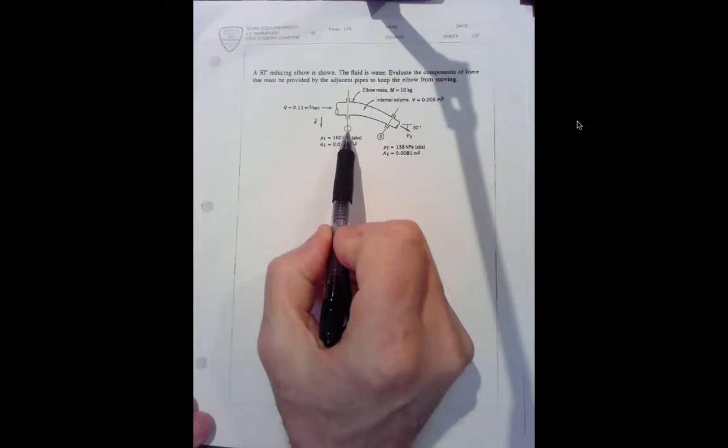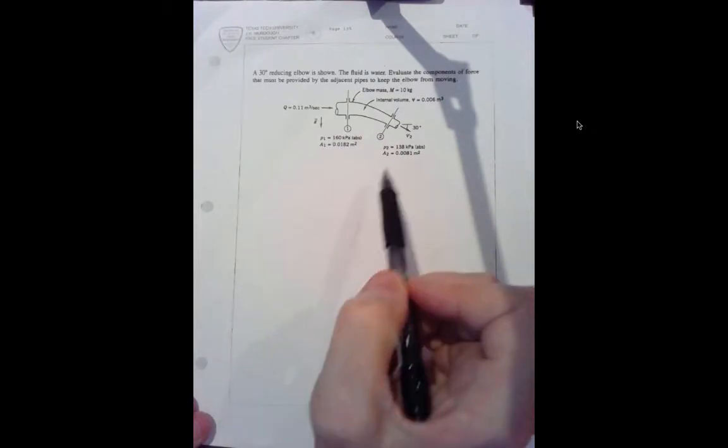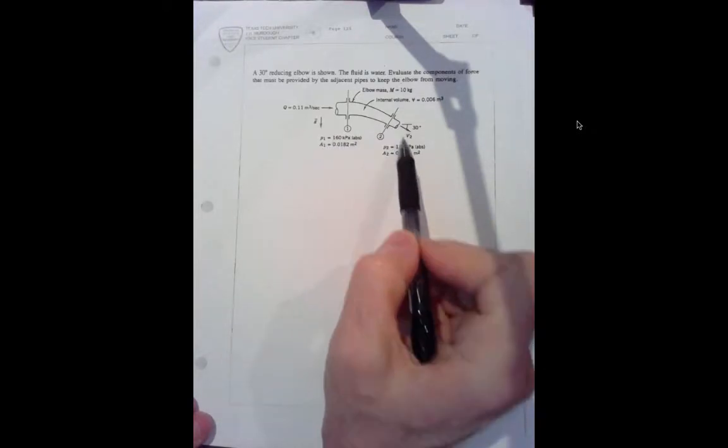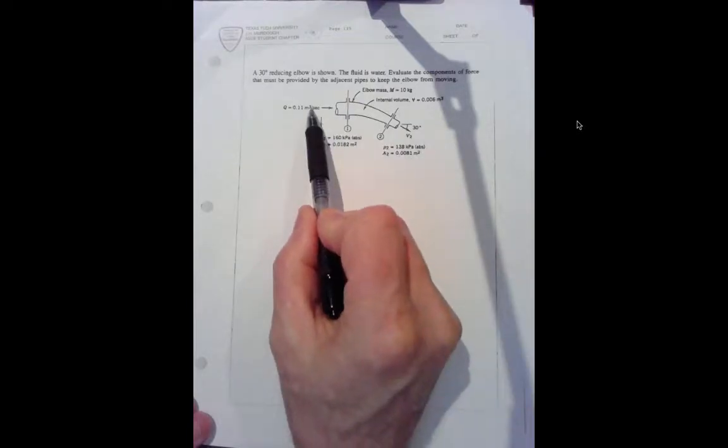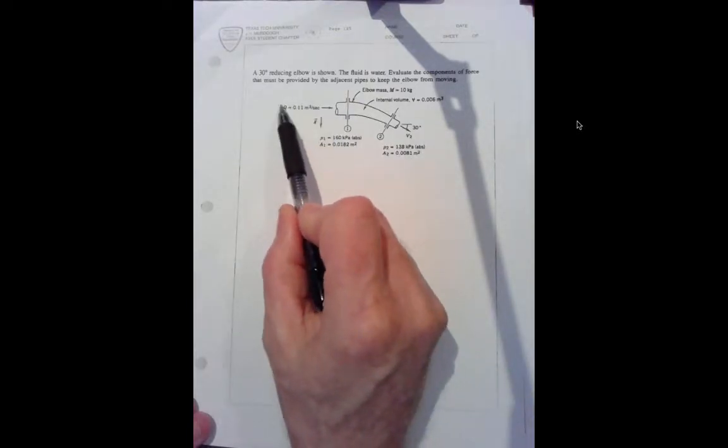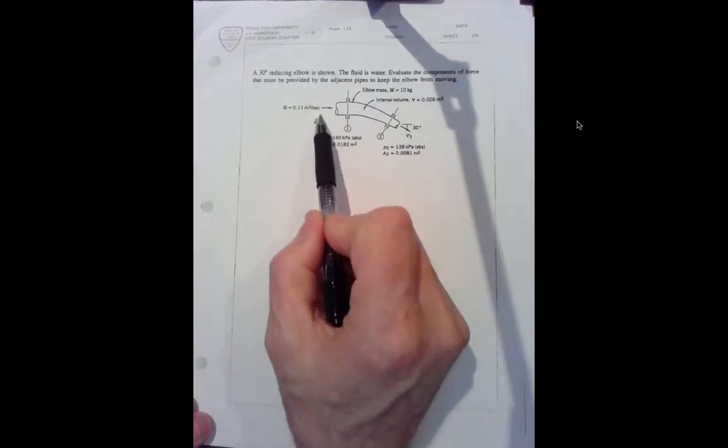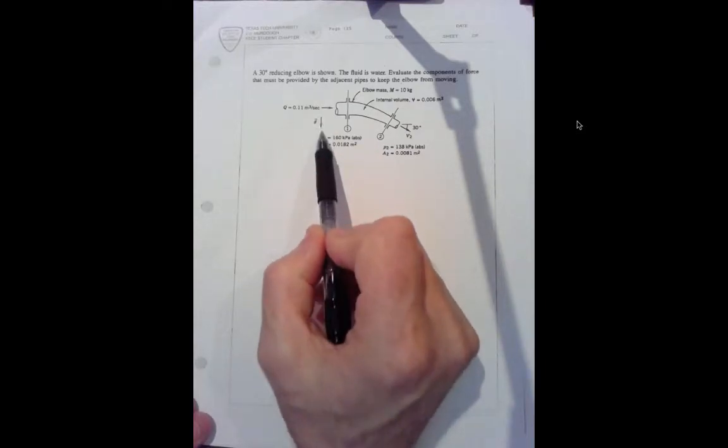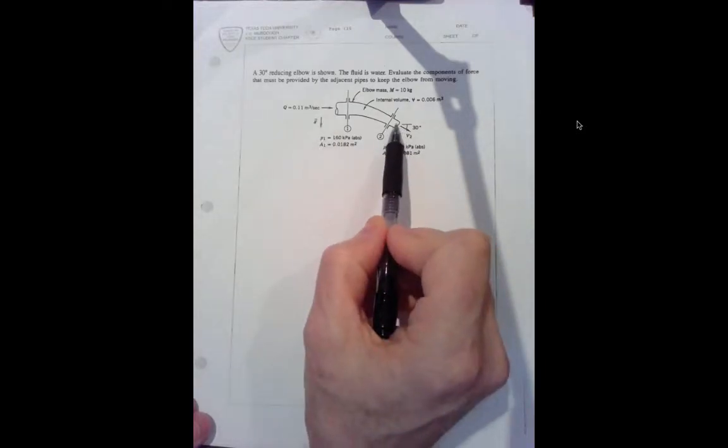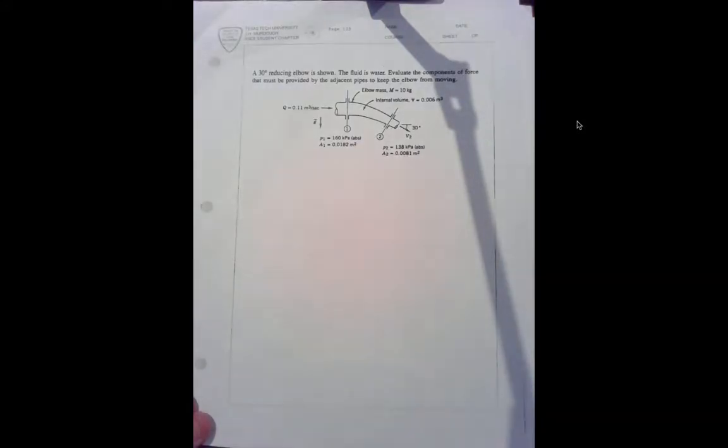At face number one, the pressure and area are given. At face number two, the pressure and area are given. And the total flow rate through the system is provided. Gravitational acceleration is downward in the drawing, and the exit is 30 degrees below the horizontal. So those are known values in essentially the sketch.